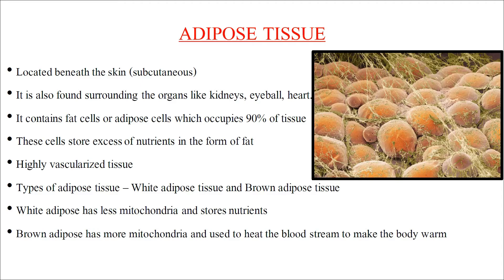Adipose tissue is located in the subcutaneous region beneath the skin, and also surrounds organs like kidneys, eyeball, and heart. It contains fat cells (adipocytes), which occupy nearly 90% of the tissue and store excess nutrients as fat. It is highly vascularized. Adipose tissue is classified into white adipose tissue, which has fewer mitochondria and stores nutrients, and brown adipose tissue, which has more mitochondria and oxidizes fat to produce heat and warm the body.